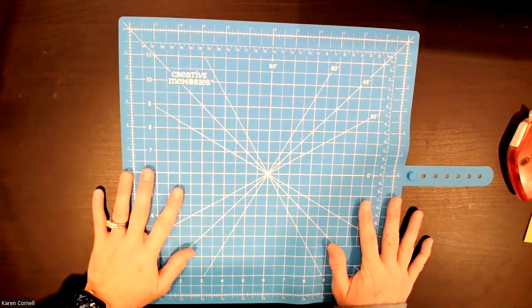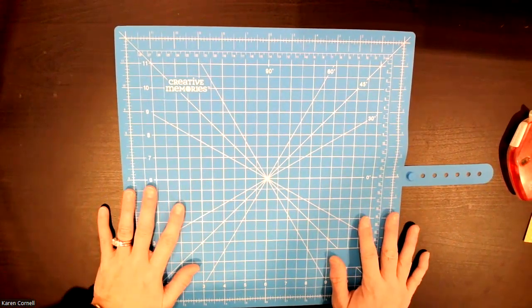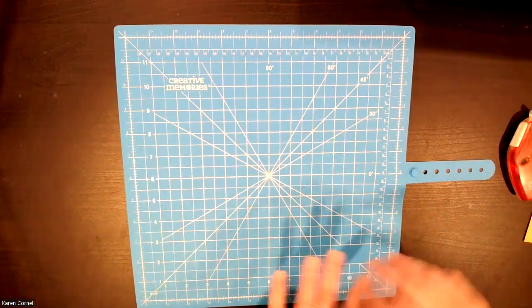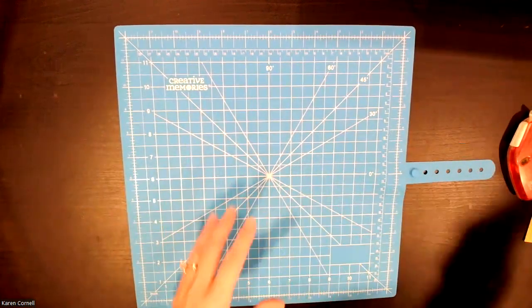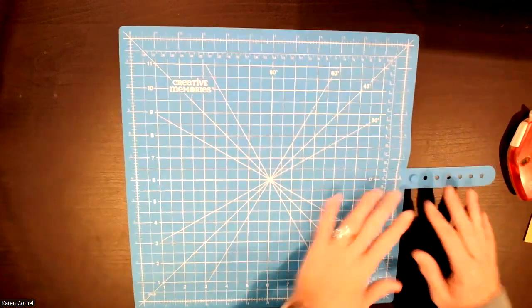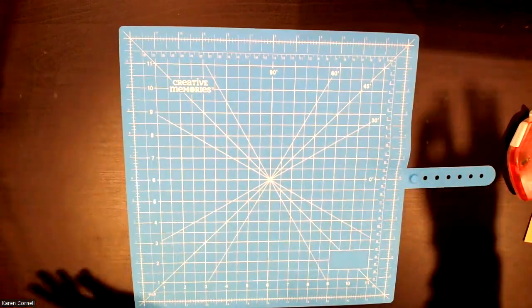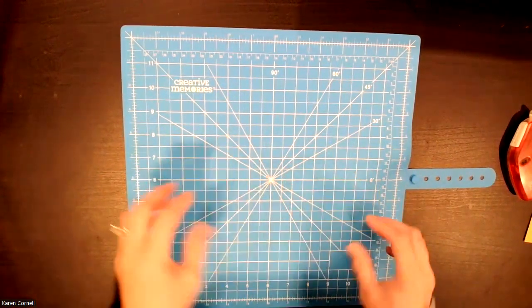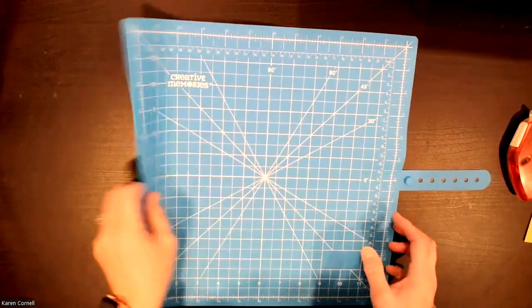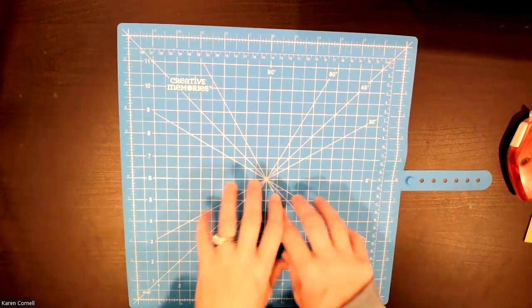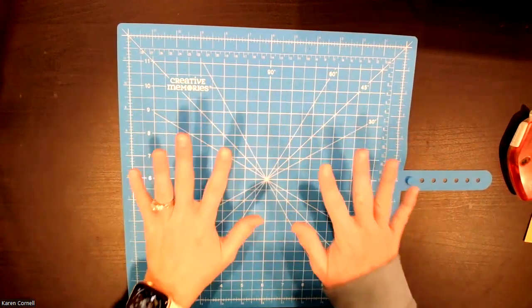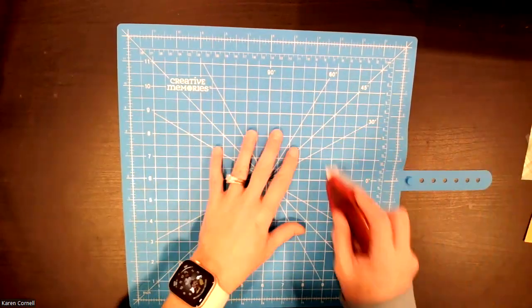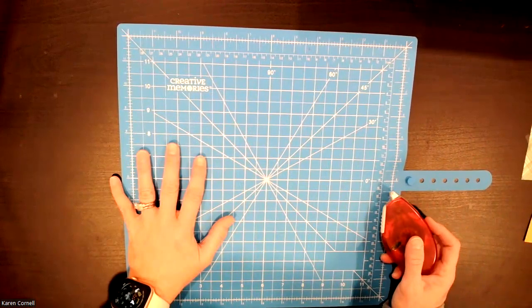The other neat thing about this is how many of you use the Cricut and you have all these little tiny pieces that you're trying to put together. It never fails, like some letter or something ends up somewhere and you're like, where's my E? Well, all the little pieces stick to this without being sticky, so you won't lose all those teeny tiny pieces when you're trying to assemble things.